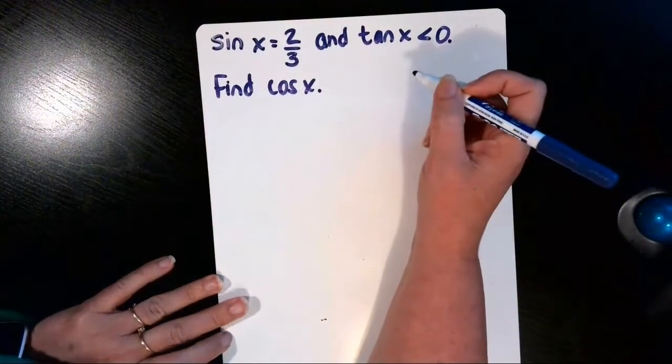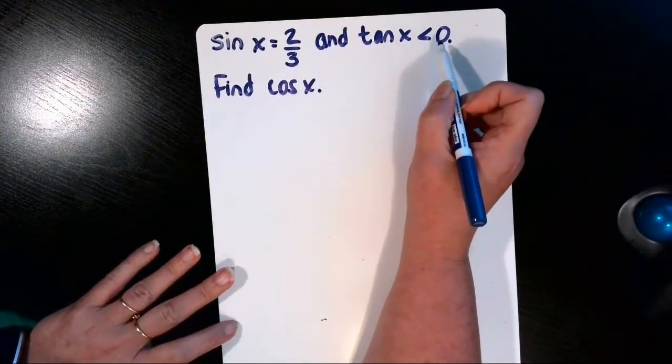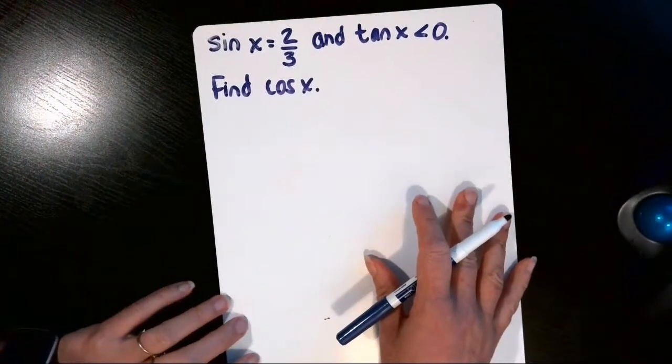Okay, we're given that the sine of x is 2/3 and the tangent is negative. We want to find the cosine.